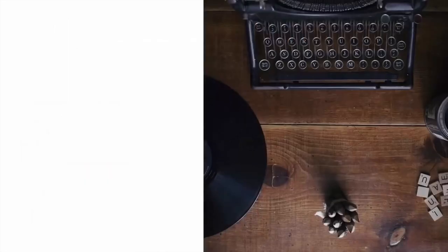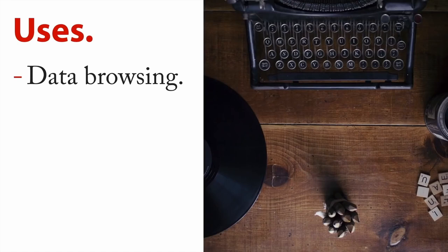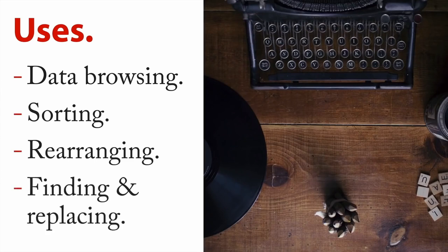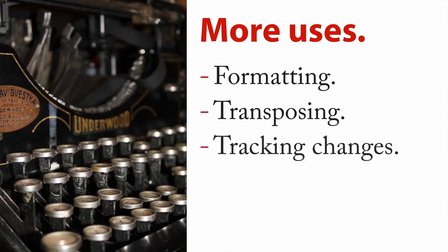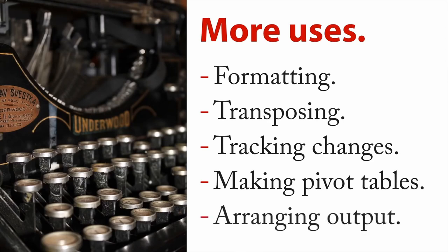Let's talk about some of the things you can do with a spreadsheet. Number one, they're really good for data browsing — you actually get to see all the data in front of you, which isn't true when doing something like R or Python. They're really good for sorting data, rearranging columns and cells, and finding and replacing. Some more uses: they're good for conditional formatting, transposing data, tracking changes, making pivot tables that let you explore data in a very hands-on and intuitive way, and arranging output for consumption.